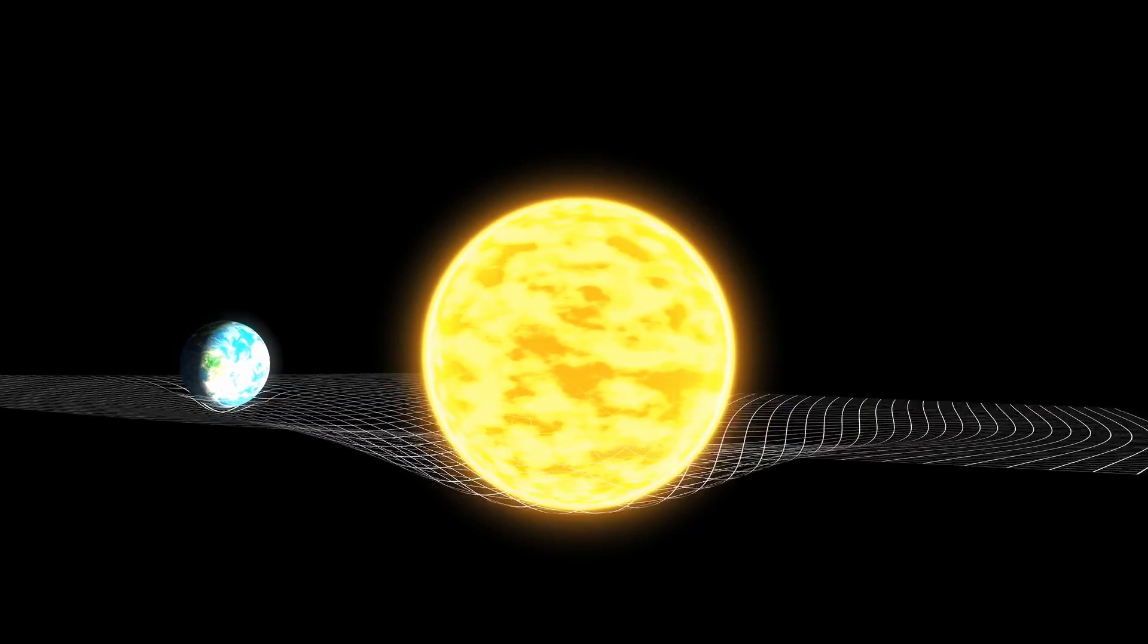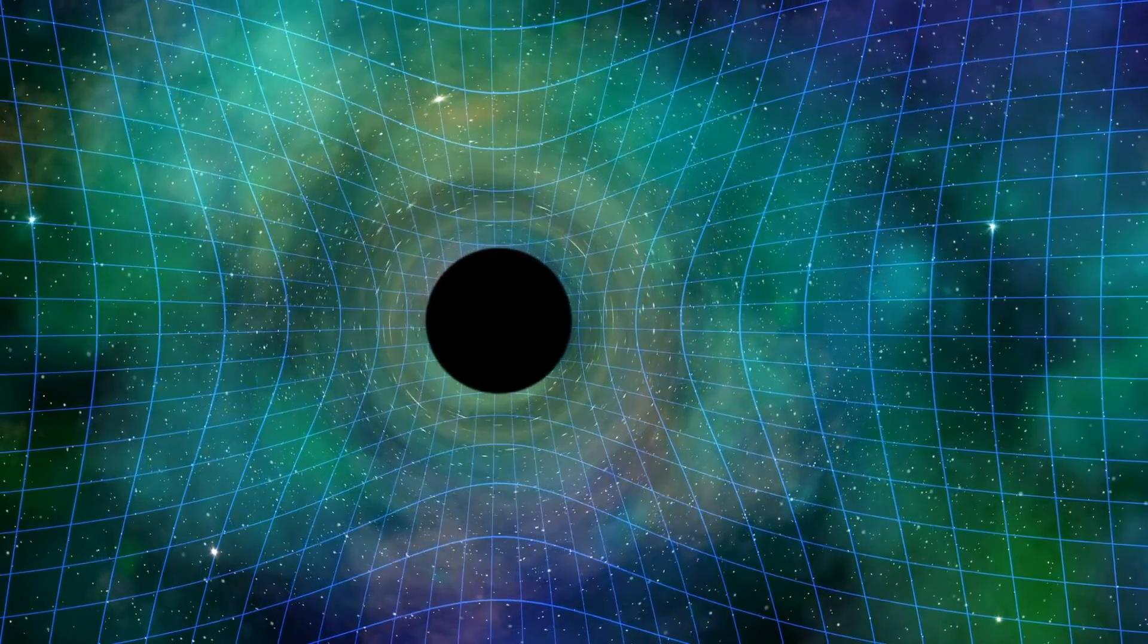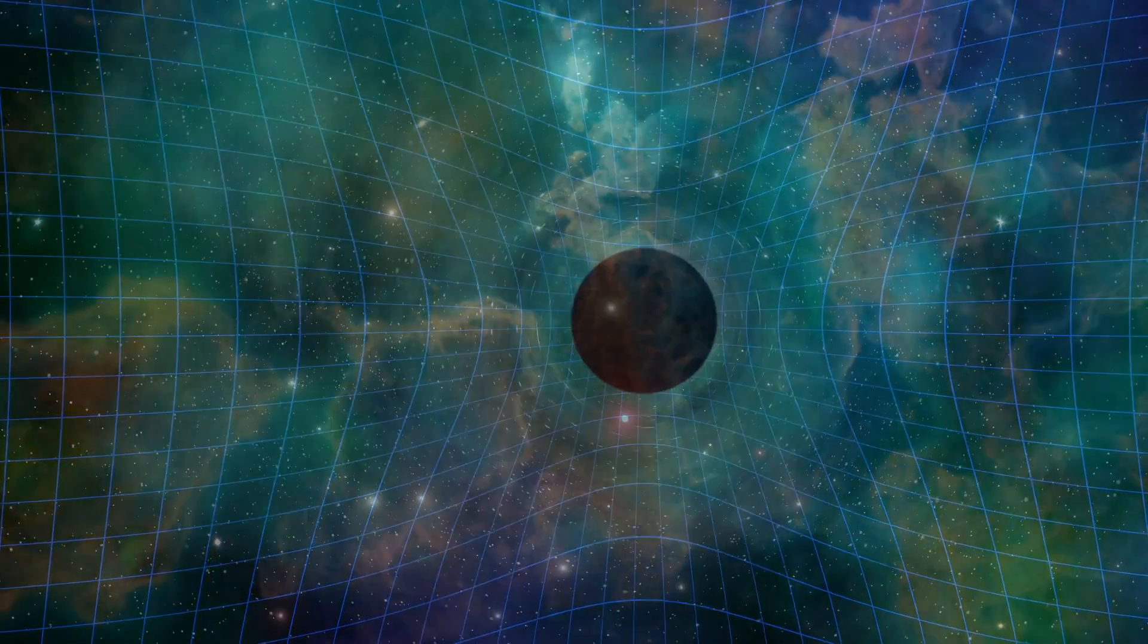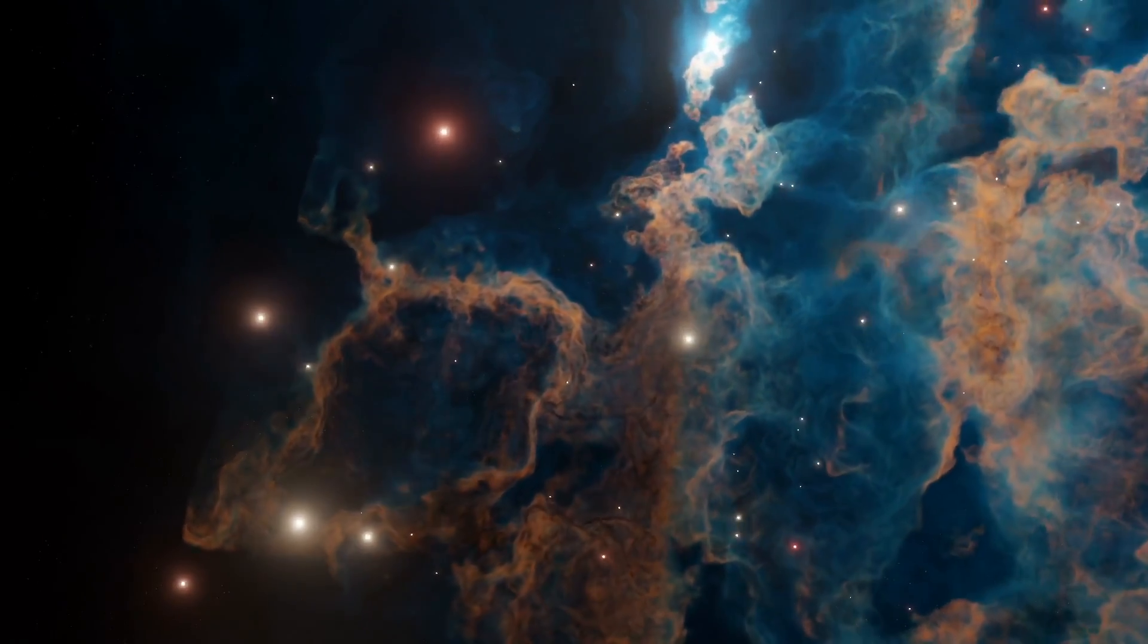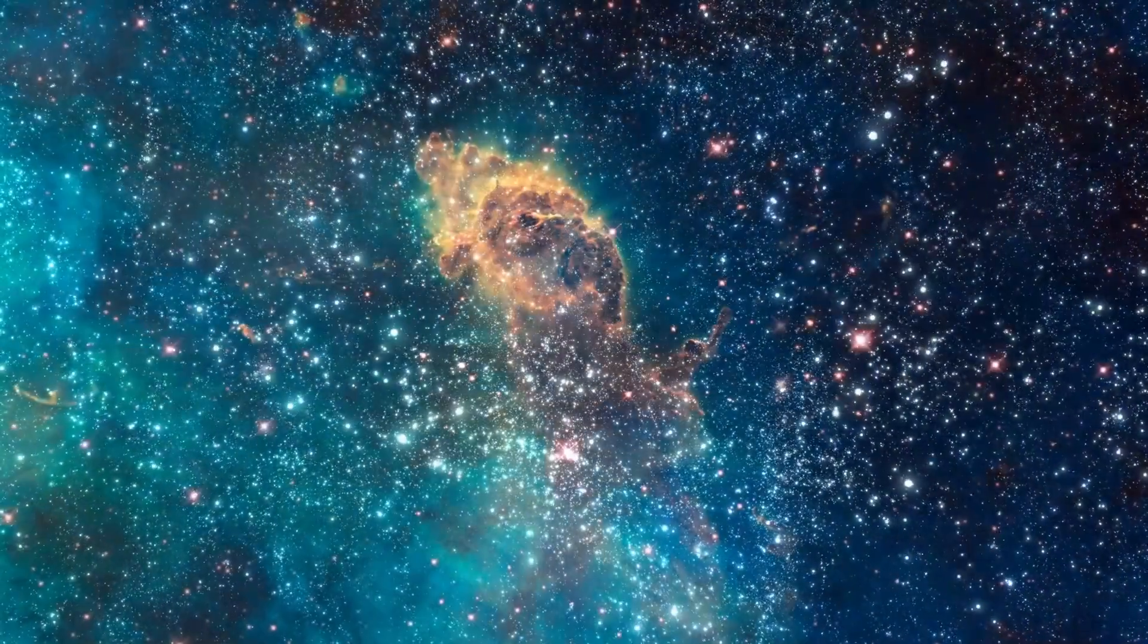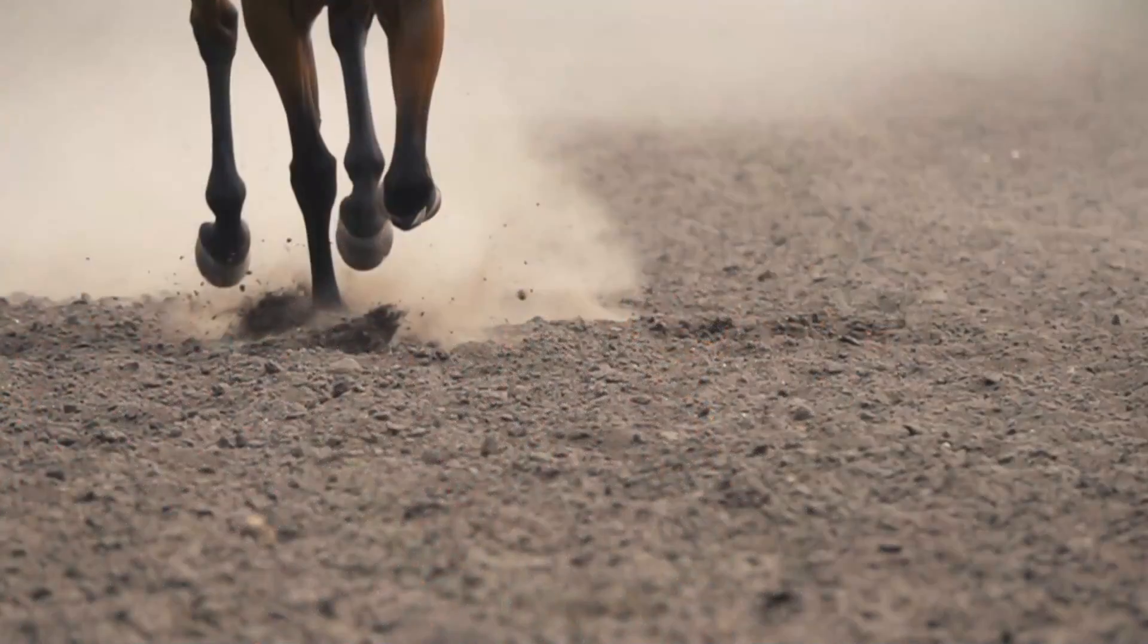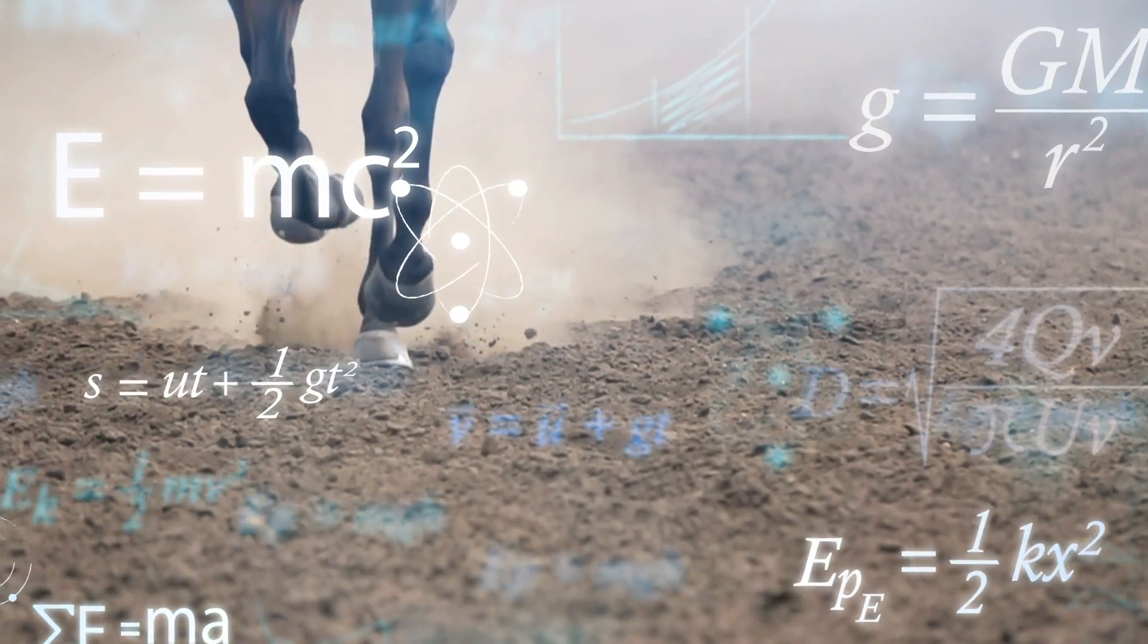So what's going on? Einstein comes up with laws of motion, his special theory of relativity. Einstein comes up with a new law of gravity, his general theory of relativity. Do they replace Newton? No. They draw a bigger circle around the applicability of Newton's laws. Newton's laws apply here. Einstein's laws take over for the rest of the universe. And if you put in low speeds and low gravity in Einstein's equations, they become Newton's equations.